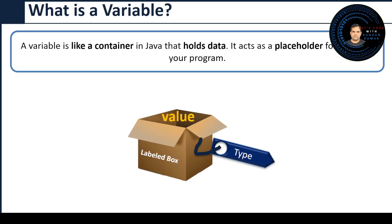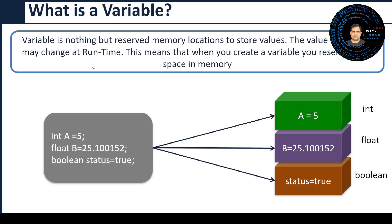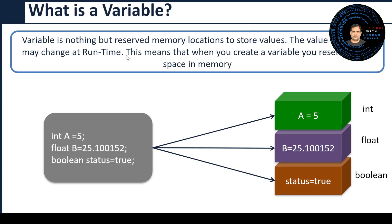This type depends on the data type that you have learned in the previous video. If you don't know what is the data type in Java, please click the 'i' icon on the top right corner — I have prepared a video on that. The technical answer is: a variable is nothing but a reserved memory location to store a value. The value of a variable may change at runtime — that's why the name is 'variable.'